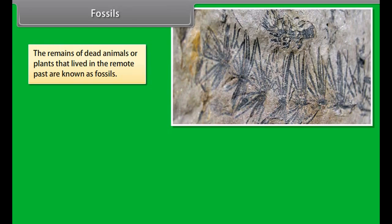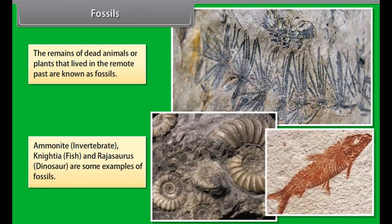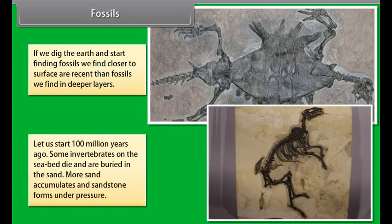Various biological studies tell us that since their origin, living organisms have been undergoing changes in their organization to evolve into new forms. Common features of different kinds of organisms provide evidence for evolution, as they can be considered to have evolved from a common ancestor. Important sources of evidence for organic evolution include homologous organs and analogous organs.